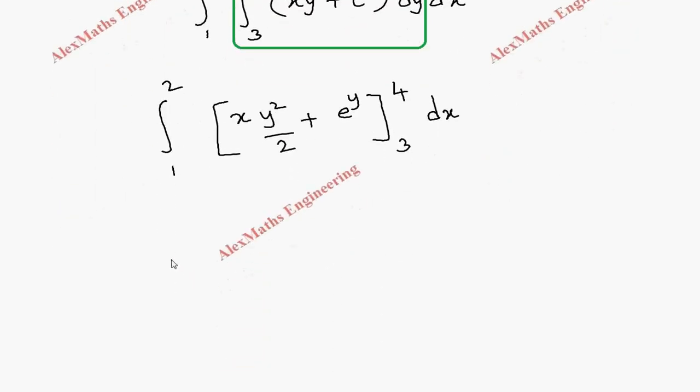Now we have to substitute upper limit then minus lower limit for y. So x into 4 square 16 then by 2 plus e power 4 minus lower limit x into 3 square which is 9 by 2 plus e power 3 into dx.